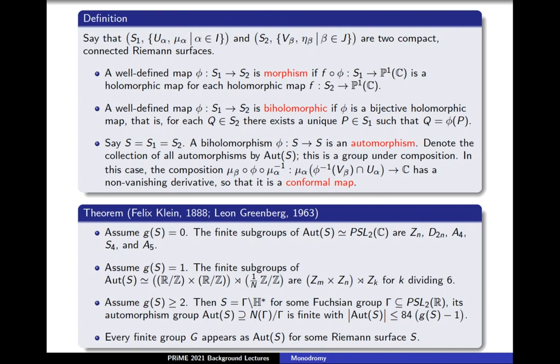Next, assume that the genus of S is 1. The finite subgroups of Aut(S), isomorphic to (R/Z) × (R/Z) semi-direct product (1/N)·Z/Z, are the cyclic group of order N cross the cyclic group of order N, semi-direct product with the cyclic group of order K, for K dividing 6.